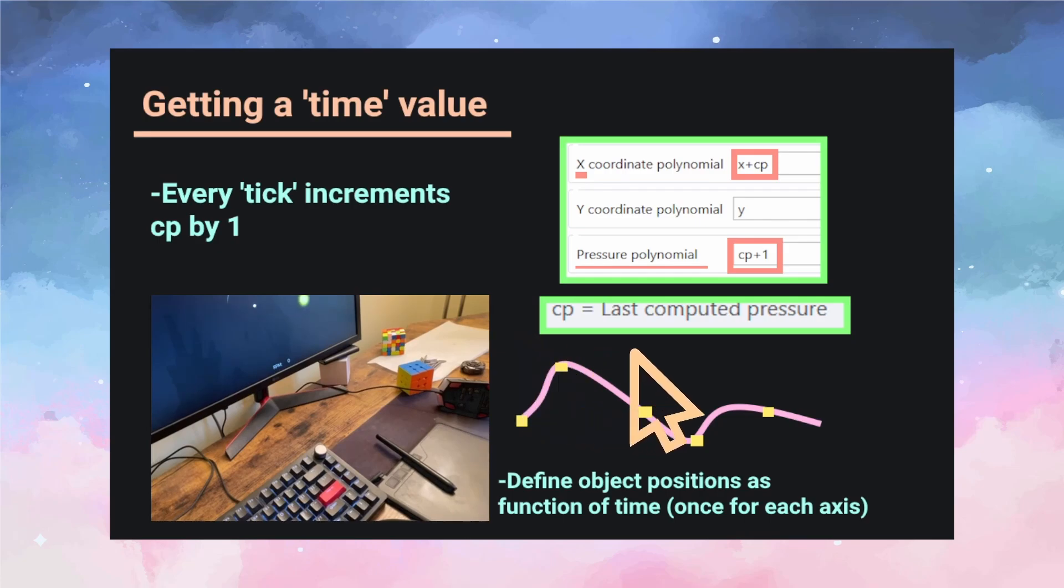So the answer comes in the form of this last computed pressure variable. This turns out to be very useful. When the filter is loaded or when we first give our input, this is initialized to zero. We can set this to be the previous computed one, plus one every tick of the filter. And this is a huge deal, we now have this global counter that keeps incrementing the longer we run the filter.